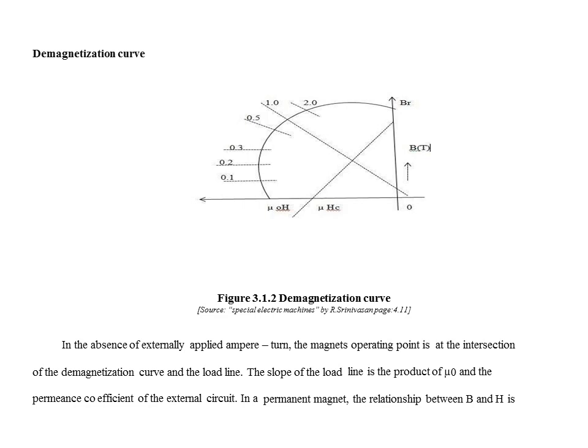Demagnetization curve: In the absence of externally applied ampere turns, the magnet's operating point is at the intersection of the demagnetization curve and the load line. The slope of the load line is the product of mu zero and the permeance coefficient of the external circuit.